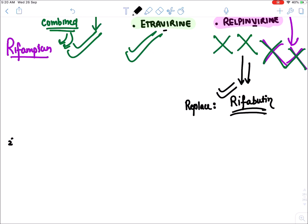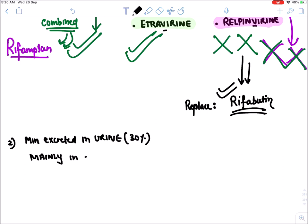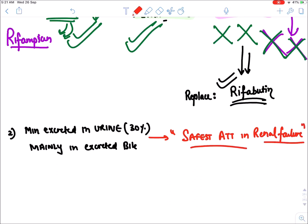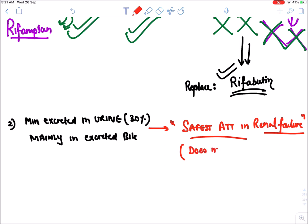Rifampicin is mainly excreted in bile (around 30% in urine). Because of this, rifampicin is the safest anti-tubercular drug in renal failure and does not require any dose modification or dose reduction in renal failure. Remember: R for rifampicin, R for renal failure.